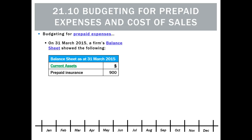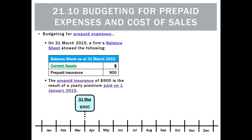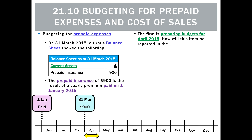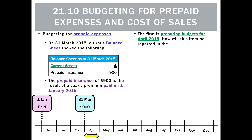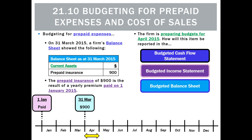Let's take an example. On the 31st of March, a business has current assets, and in it there is prepaid insurance of $900 in our balance sheet. The prepaid insurance is actually paid on the 1st of January. We're going to do a budget just for April, so we'll need to figure out how much goes in the budgeted cash flow statement, income statement, and balance sheet for April.